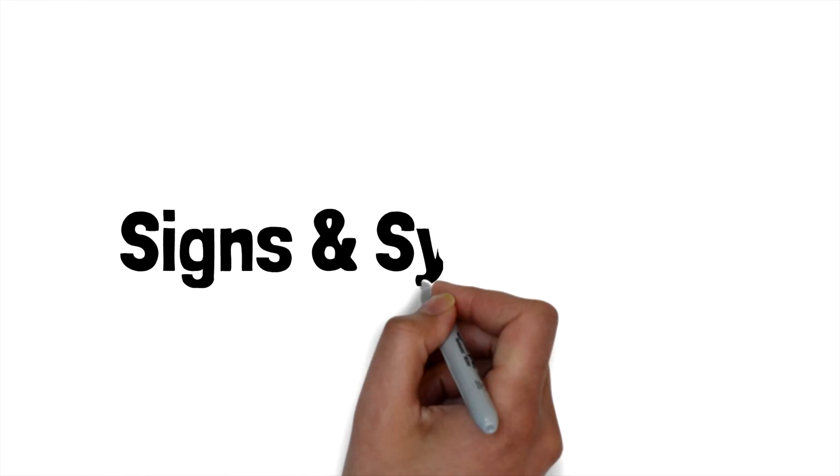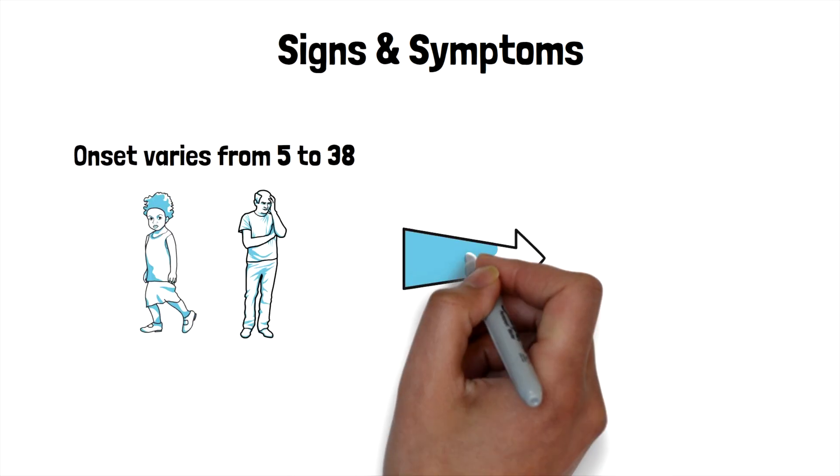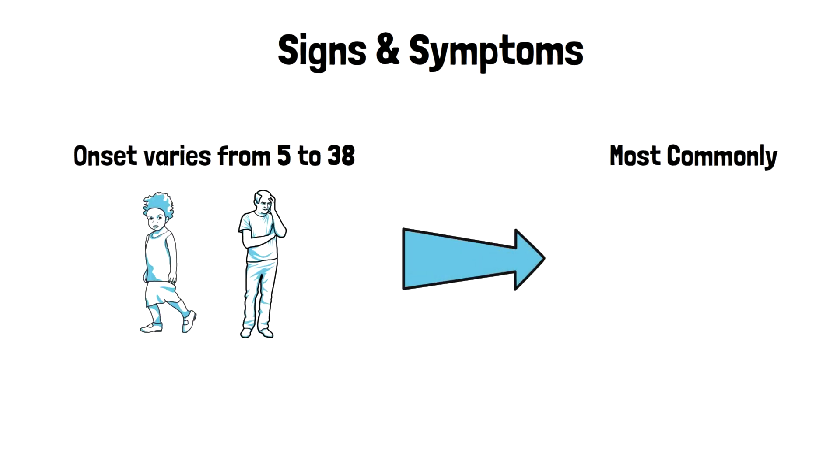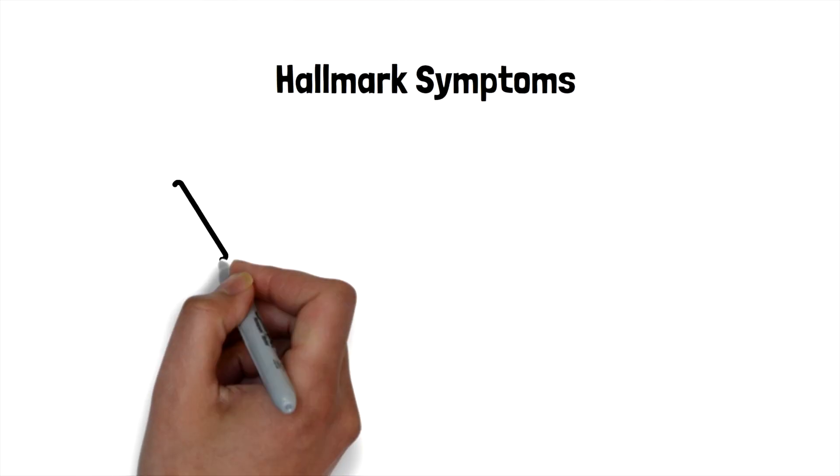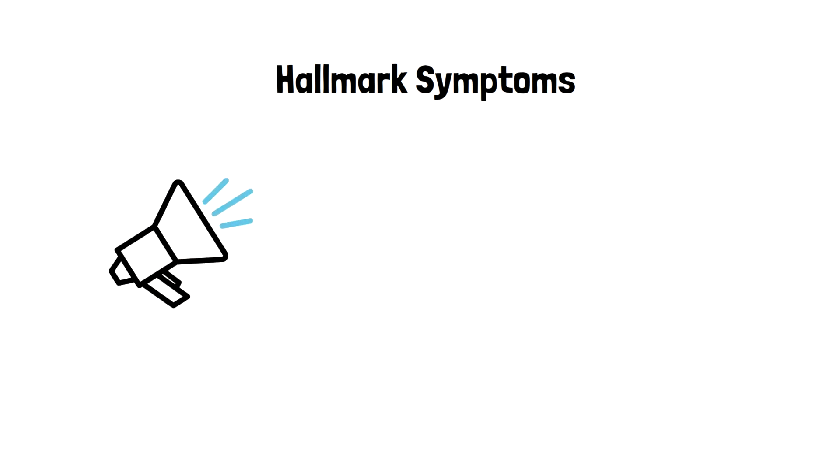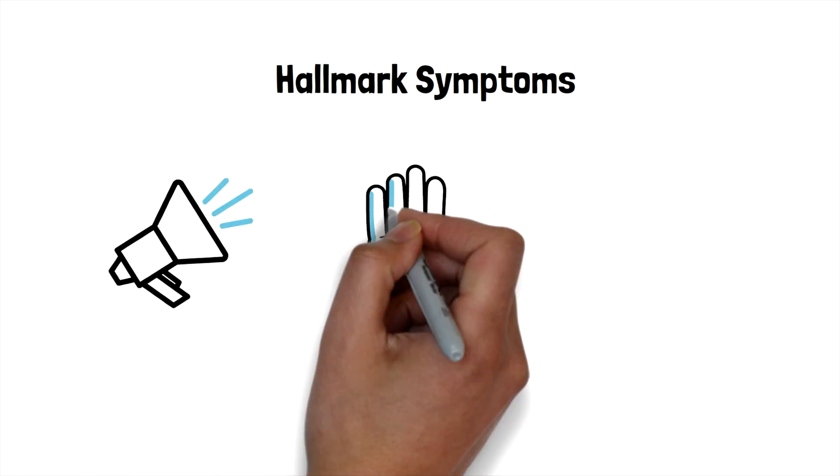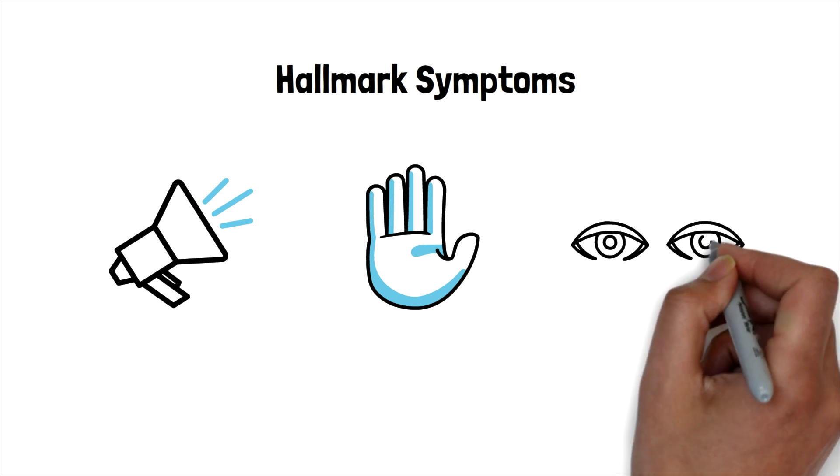So what exactly are the signs and symptoms of dystonia? Although the onset of dystonia varies from 5 to 38, the most common form usually manifests around 19 years of age. Typically, dystonia affects the basal ganglia and the cranial area of the brain, as well as muscles throughout the body in the face, throat, lungs, and limbs. There are numerous hallmark symptoms of dystonia, including speech difficulties, dragging leg, hand and foot cramps, and uncontrollable blinking.